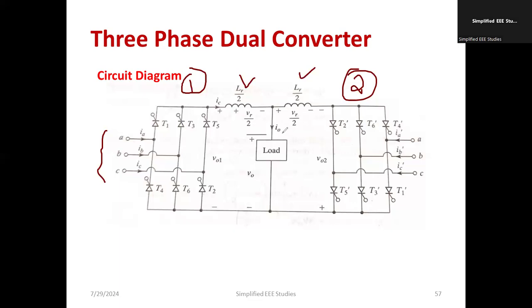The load current is denoted by I_0. The output voltage of the first converter is V_01, and the output voltage of the second converter is V_02. The resultant output voltage V_R is given by V_01 minus V_02, because V_01 and V_02 are 180 degrees out of phase.